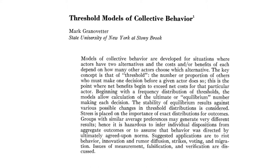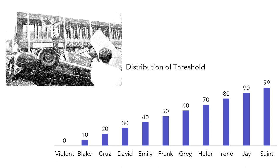The threshold model was also used to study the collective behavior of riots. For example, a hundred people are gathering in front of city hall, protesting against city policy. You are one of them, but being an educated, civilized resident, you understand that reason and dialogue are a better approach than violence. In a protest you face two options: a violent protest or a peaceful one. Mark Granovetter developed a distribution of each protestor's threshold — there are a hundred people, and everyone has a unique threshold.